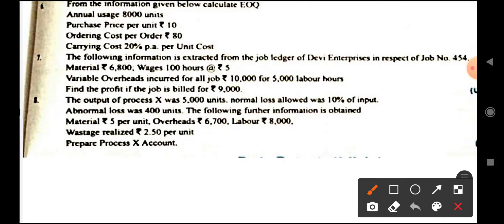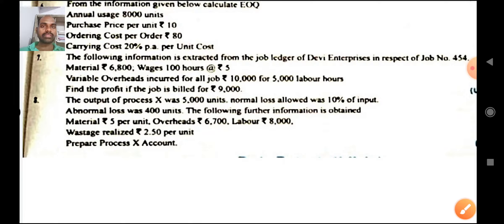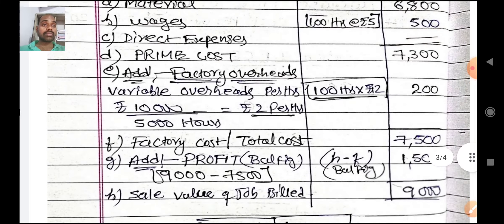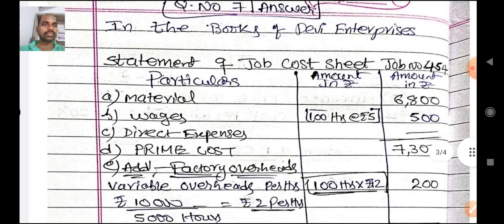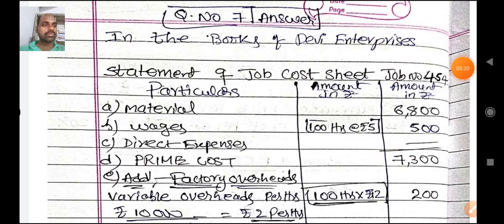Next, they are saying find out profit if job is billed at 9,000 rupees — that is your selling price per job is 9,000. What will be your profit? That is what they are asking. It is an easy question — you have already done such problems many times.